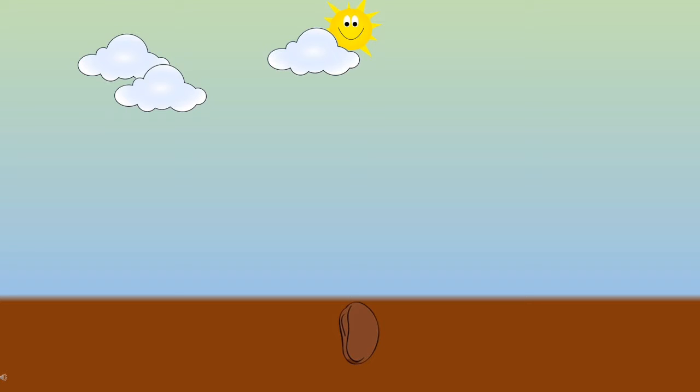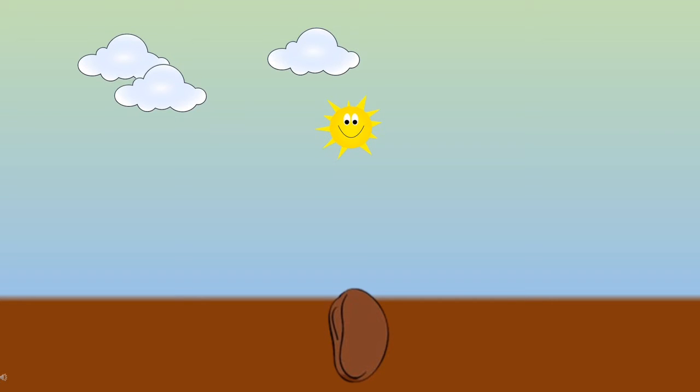First of all, seeds get planted in soil. Life of a plant begins from a tiny seed. A tiny seed needs water, sunlight and air to grow healthy and strong.